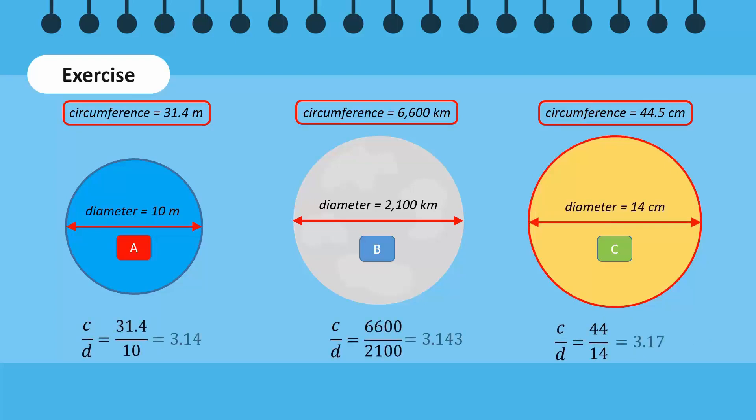After dividing the circumference with the diameters of the circles, we see that all circles give approximately the same value, which is π.